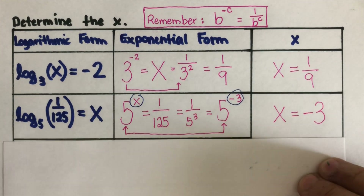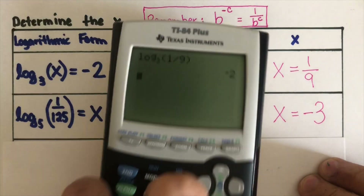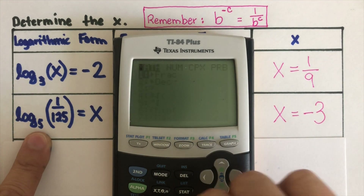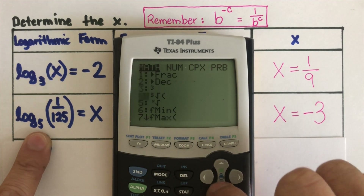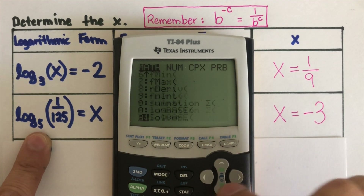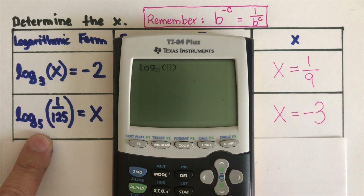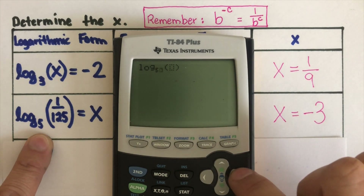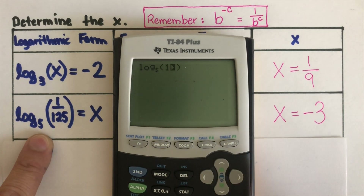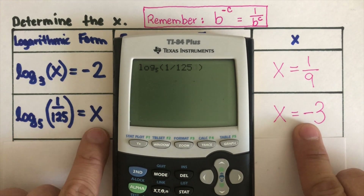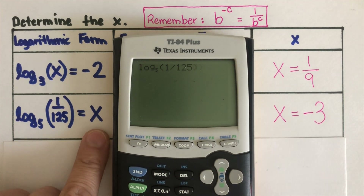Let's see if this would work on the calculator. Setting up log base 5 of 1 divided by 125, the answer should be negative 3. And it is negative 3.